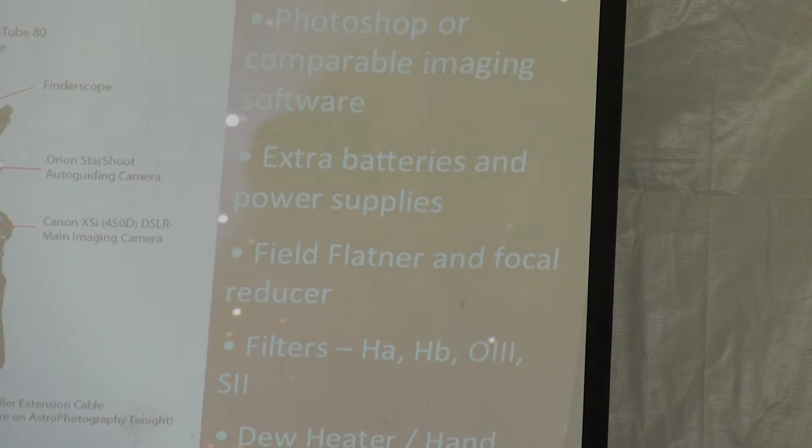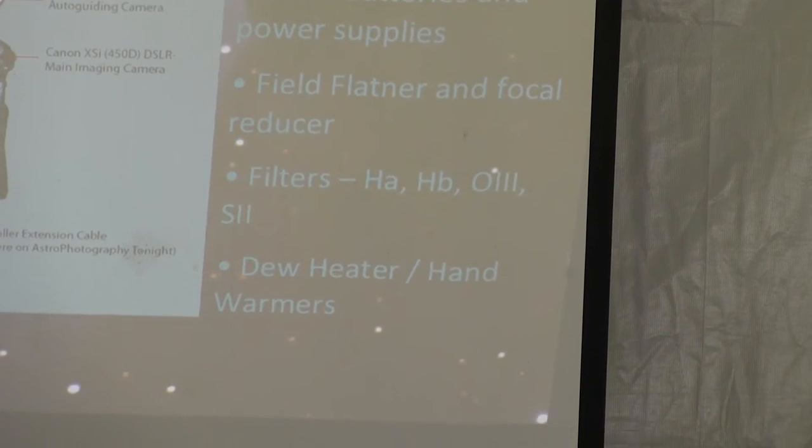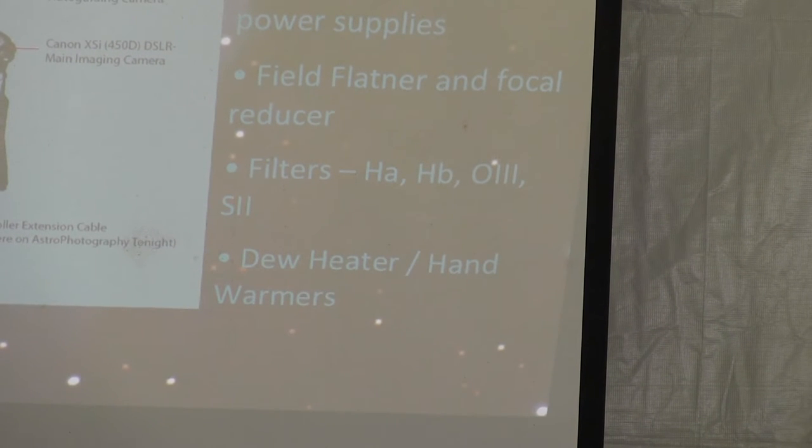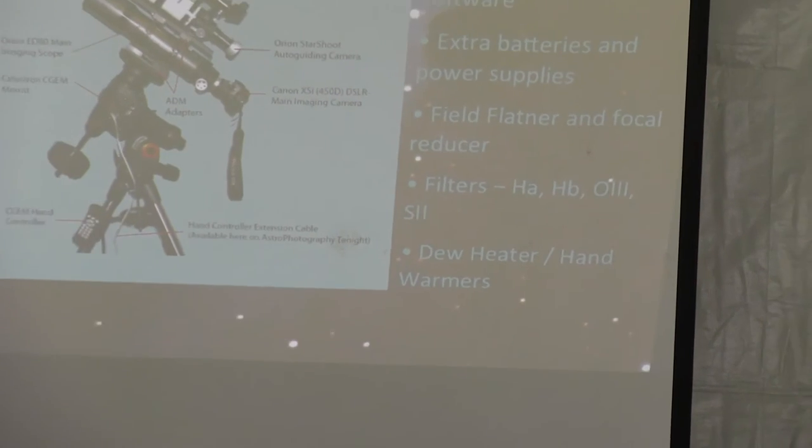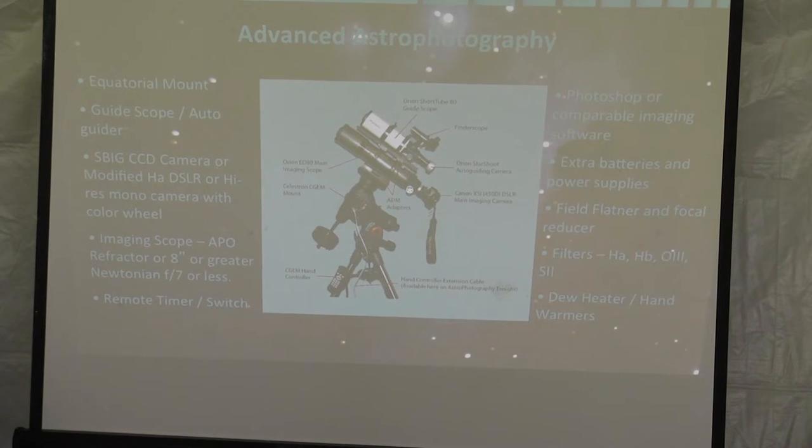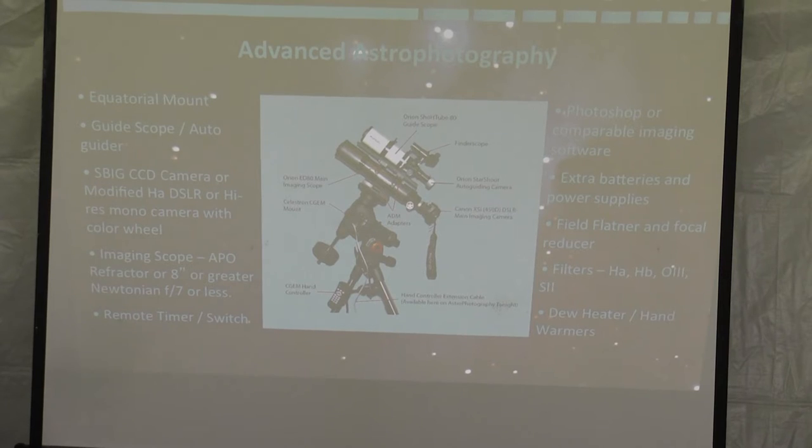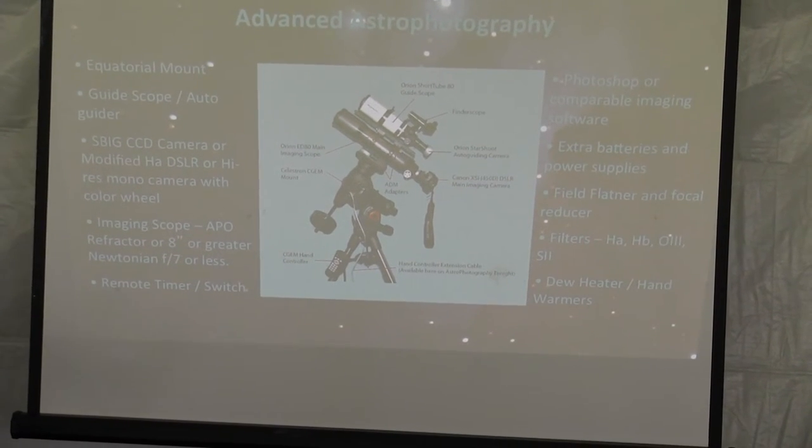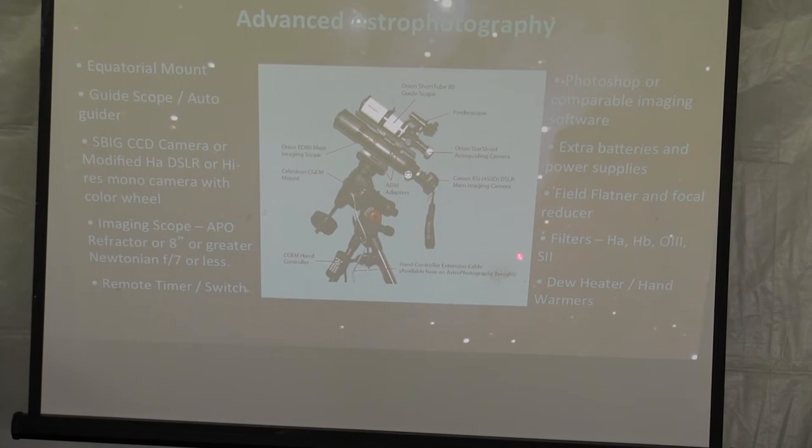You're going to need extra batteries. You will be out there in the field and you want the power packs. It's good to have a field flattener or a focal reducer. You're going to want filters. Look for these keywords: HA, hydrogen alpha, hydrogen beta, oxygen 3, and sulfur 2. Those are the most popular light wavelengths emitted by nebulas in the cosmos. You're also going to need a dew heater. I cheat. I buy hand warmers that you use for skiing. I stick those in key places, and my telescope works just fine.